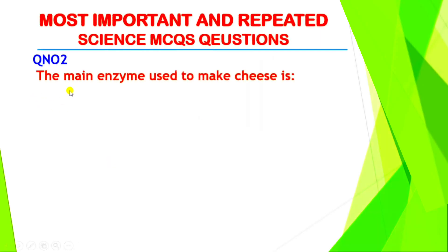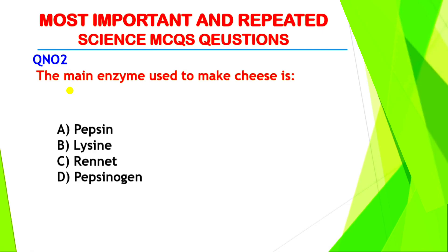Question number two: what is the main enzyme used to make cheese? The right answer is option C, rennet. An enzyme is a special type of protein which accelerates chemical changes in the body or any process. Rennet is an enzyme which coagulates milk so that cheese can be made — it helps coagulate the protein present in the milk, causing the milk to harden and turn into cheese.